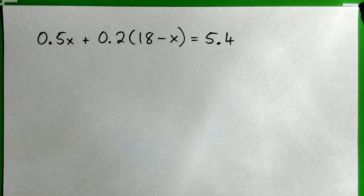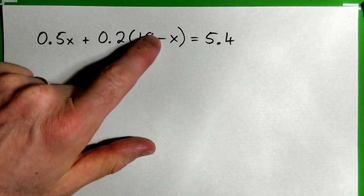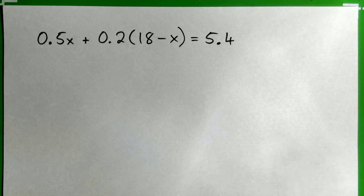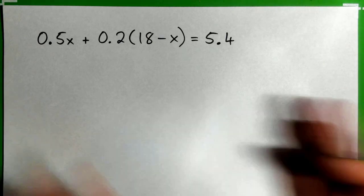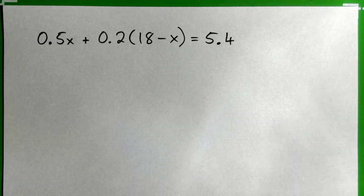All right, so we get 0.5x plus 0.2 times 18 minus x equals 5.4. So we need to simplify both sides of the equation before we solve it.